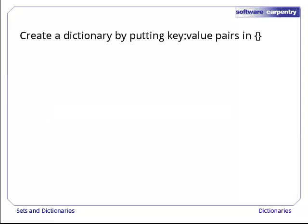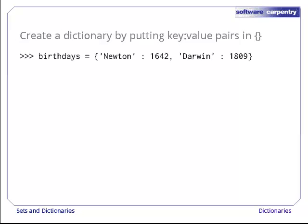You can create a new dictionary by putting key-colon-value pairs inside curly braces. For example, here we're creating a new dictionary with two entries and assigning it to the variable birthdays.